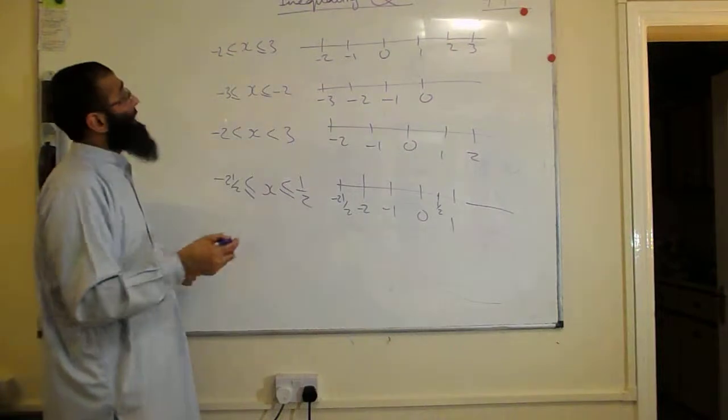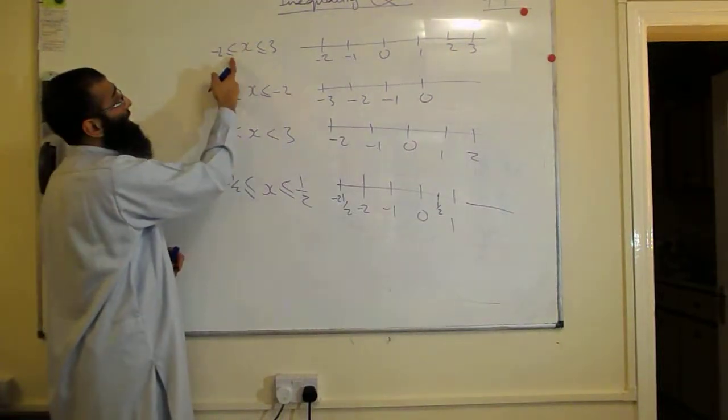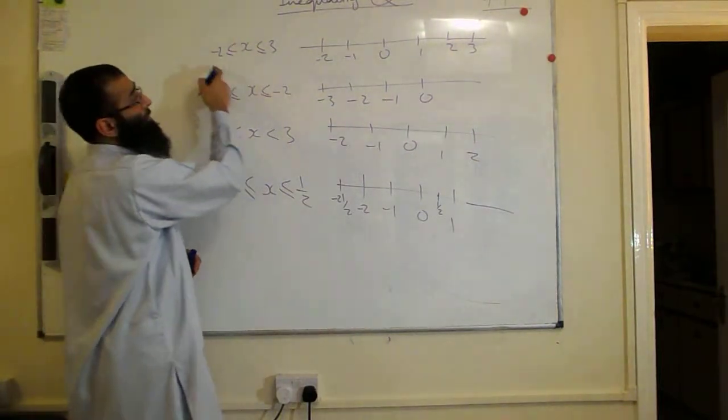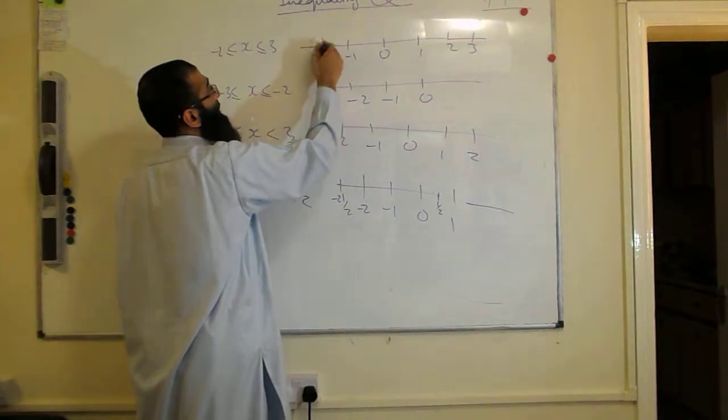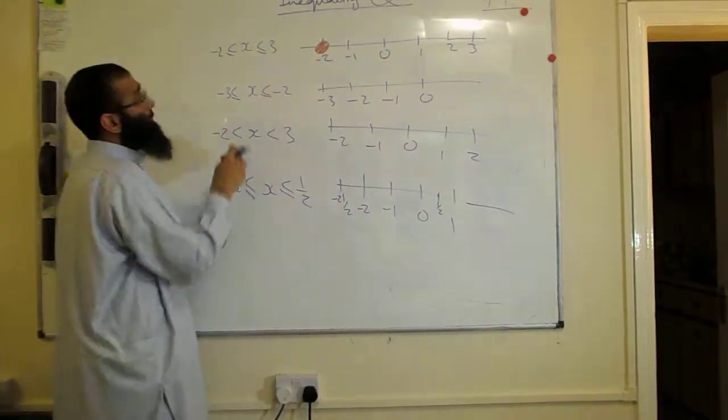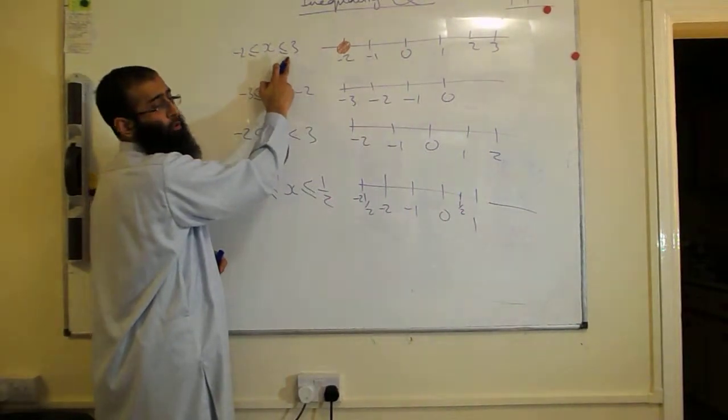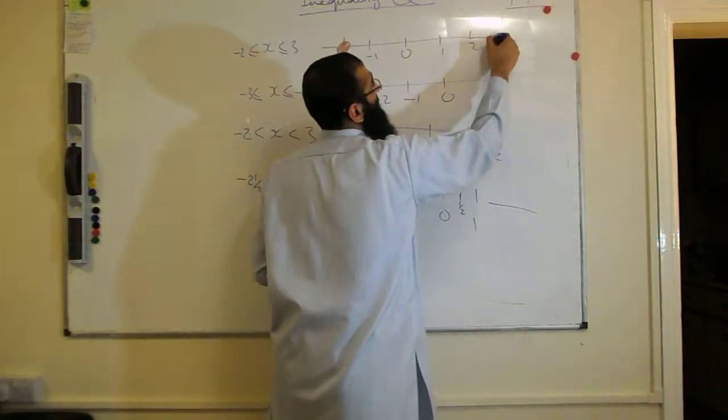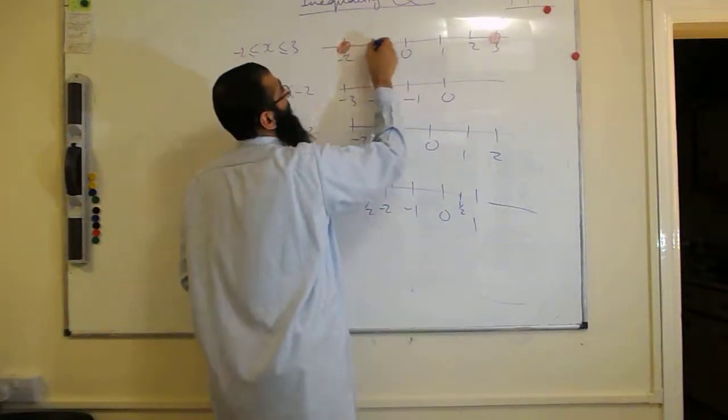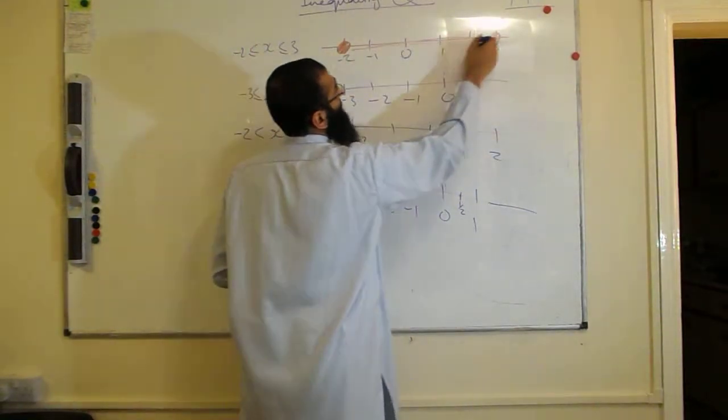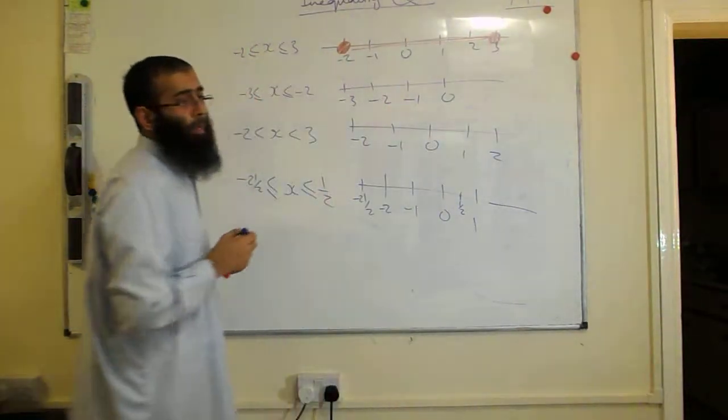This is half, so X must be greater than or equal to minus 2. That dot is solid because we have equal to. But X must be less than or equal to 3, so over here. The answer is going to be in between here.